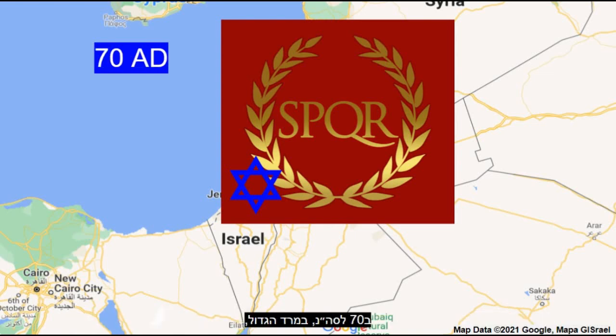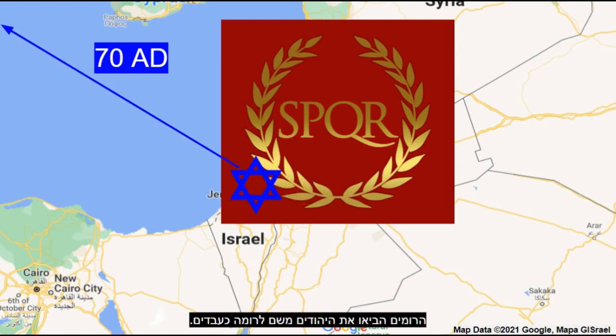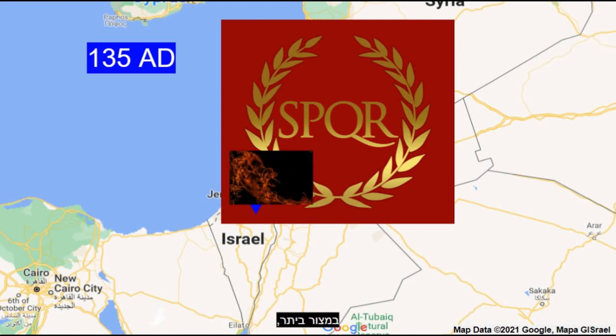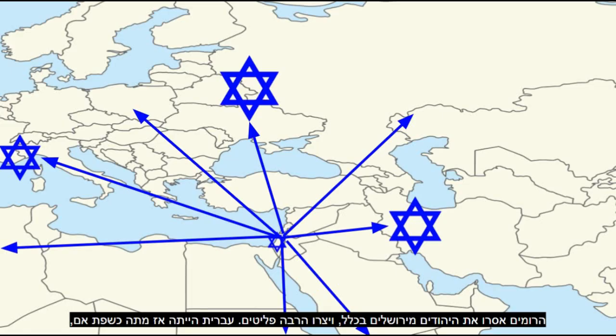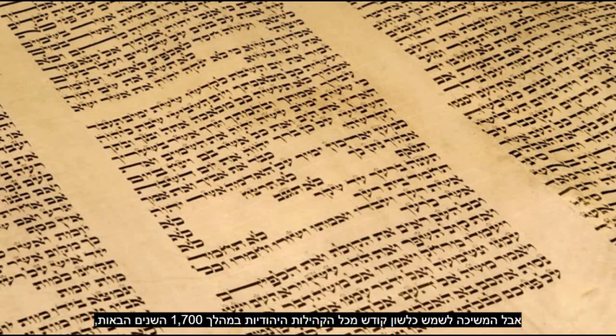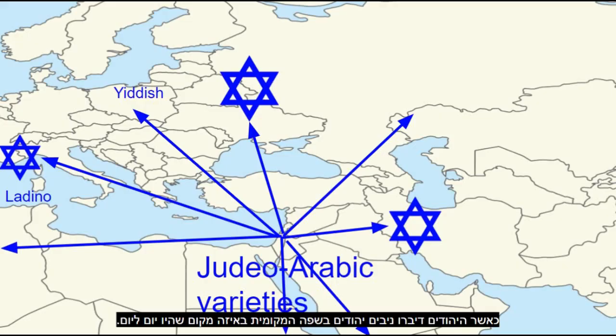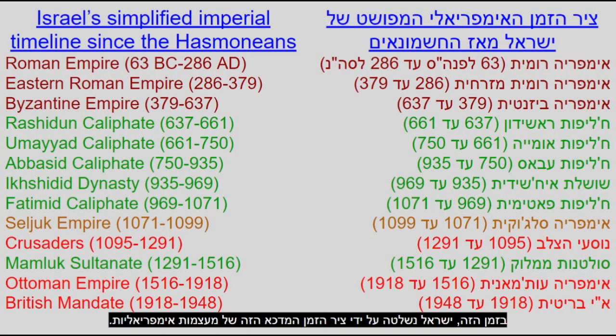In 70 AD, in the First Jewish-Roman War, after the Siege of Jerusalem, the Romans took the Jews there to Rome as slaves. In 135 AD, after the failed Bar Kokhba revolt in the Siege of Betar, the Romans banned Jews from Jerusalem entirely and created many refugees. Hebrew was now dead as a native language but continued to be used as a liturgical language by all the Jewish communities over the next 1700 years, while the Jews spoke Jewish dialects of the local language for daily matters. During this time, Israel was ruled by a depressing timeline of imperial powers.